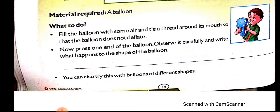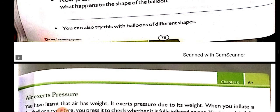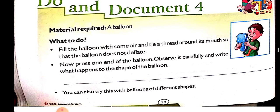Now tie a thread around its mouth so that the balloon does not deflate. Then press one end of the balloon. We can press the balloon from one end. Observe carefully and write what happens to the shape of the balloon. You can say that it changes its shape when we press the balloon — so we can say that air takes the shape of the object it fills.